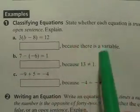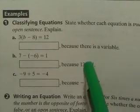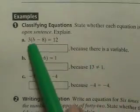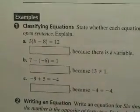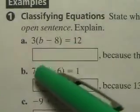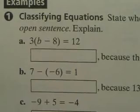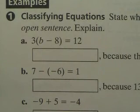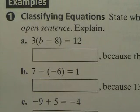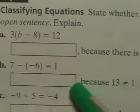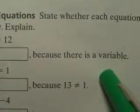The good part is, they already explained right here. All we have to do is say true, false, or open. Let's look at letter A. So, letter A, is this true, false, or open? And it says, the reason why is because there is a variable.